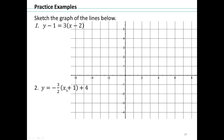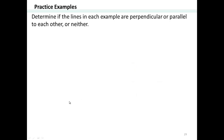So x is negative 1 — the x-coordinate is negative 1. When x is negative 1, the y-coordinate will be 4, so that point is right there. The slope is negative 3 halves, so 3 down and 2 over — there's your point. Connect the two, and there's your equation. The slope is negative 3 halves.